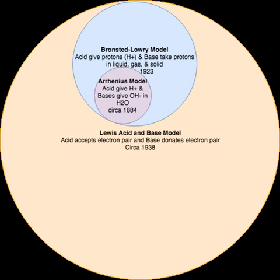In 1963, Ralph Pearson proposed a qualitative concept known as the Hard and Soft Acids and Bases principle, later made quantitative with help of Robert Parr in 1984. Hard applies to species that are small, have high charge states, and are weakly polarizable. Soft applies to species that are large, have low charge states, and are strongly polarizable. Acids and bases interact, and the most stable interactions are hard-hard and soft-soft. This theory has found use in organic and inorganic chemistry.